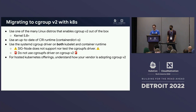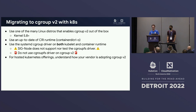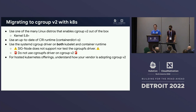A few things to be aware of as you migrate to cgroup V2 in Kubernetes: use one of the latest Linux distros that enables cgroup V2 by default. You need kernel 5.8 or newer. Use an up-to-date CRI runtime — containerd and CRI-O both support cgroup V2. Make sure you're using the systemd cgroup driver on both Kubelet and container runtime. SIG Node does not support or test the cgroupfs driver for cgroup V2. For hosted Kubernetes offerings like GKE, AKS, or EKS, work with your vendor to understand their cgroup V2 adoption.